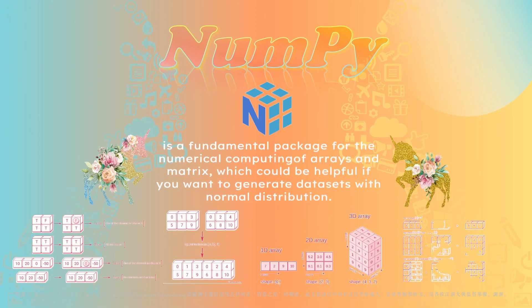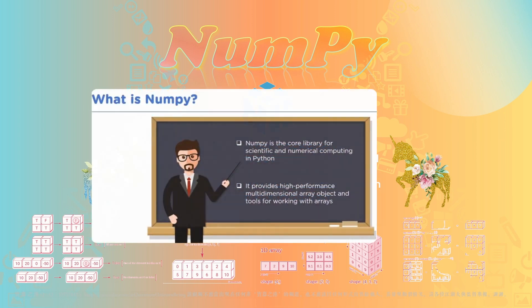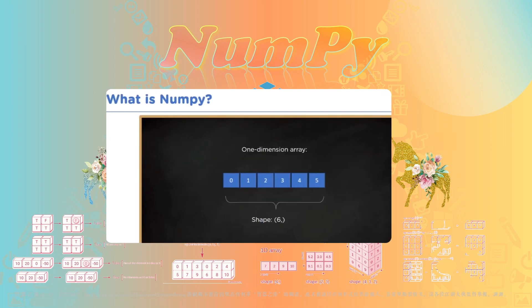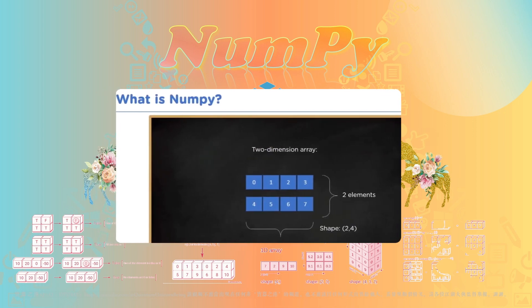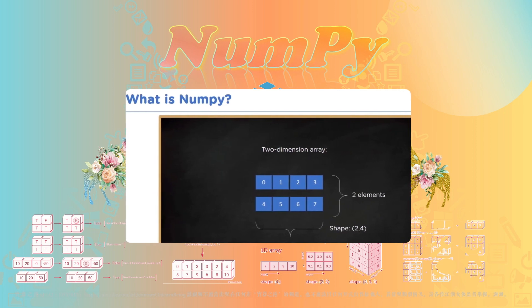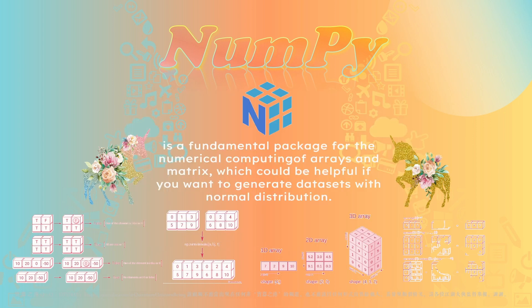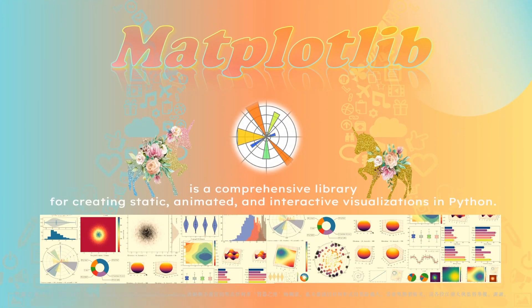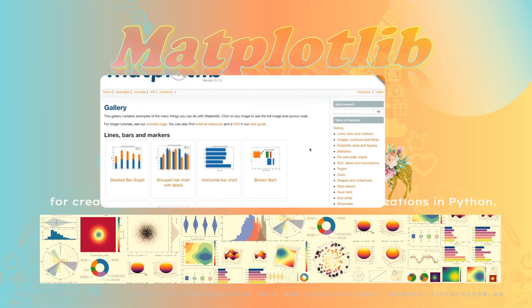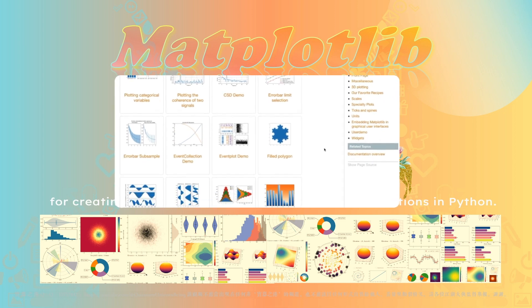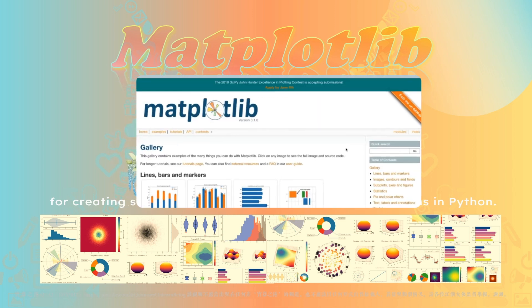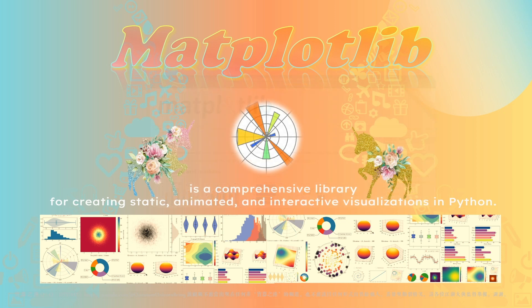NumPy is a fundamental package for numeric computing with arrays and matrices. It is also a convenient tool for generating random numbers, which could be helpful if we want to shuffle data or generate a dataset with a normal distribution. Matplotlib is a comprehensive library for creating static, animated, and interactive visualizations in Python. It can create publication-quality plots, make interactive figures, and customize visual style and layout.